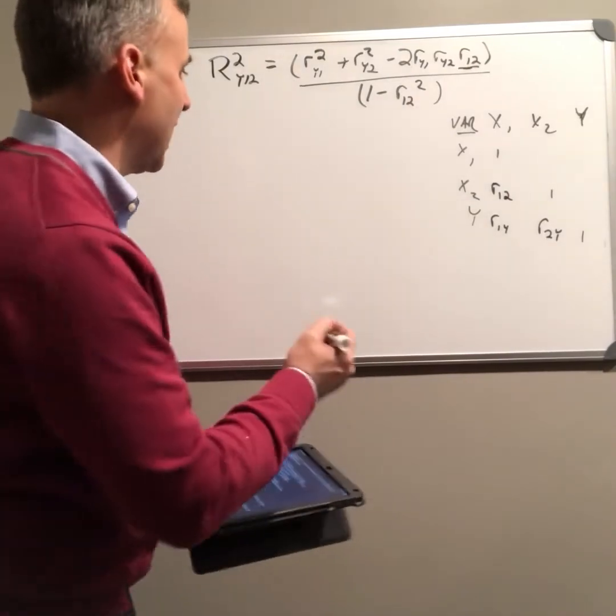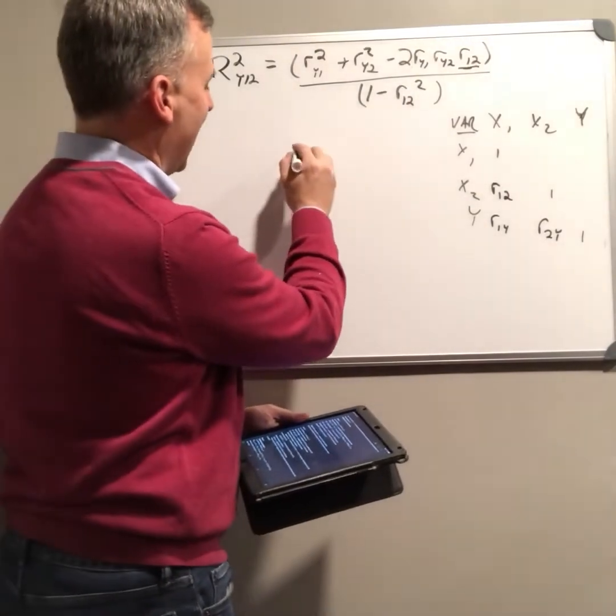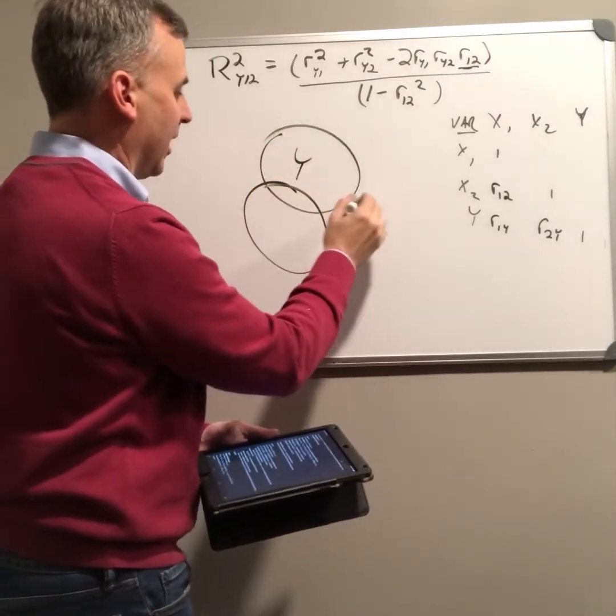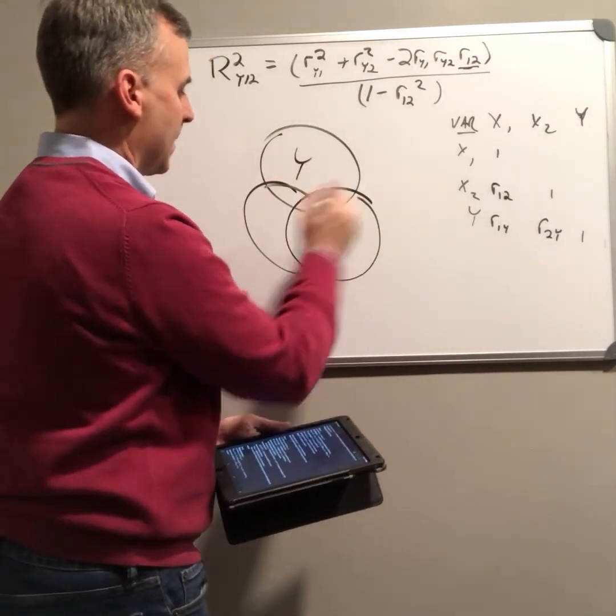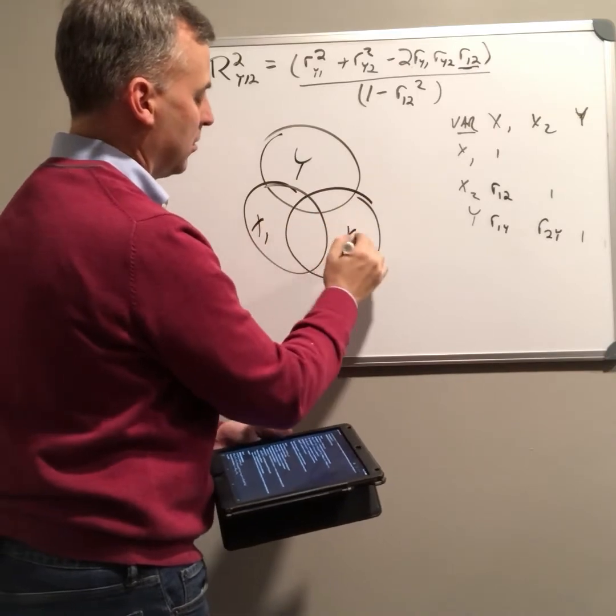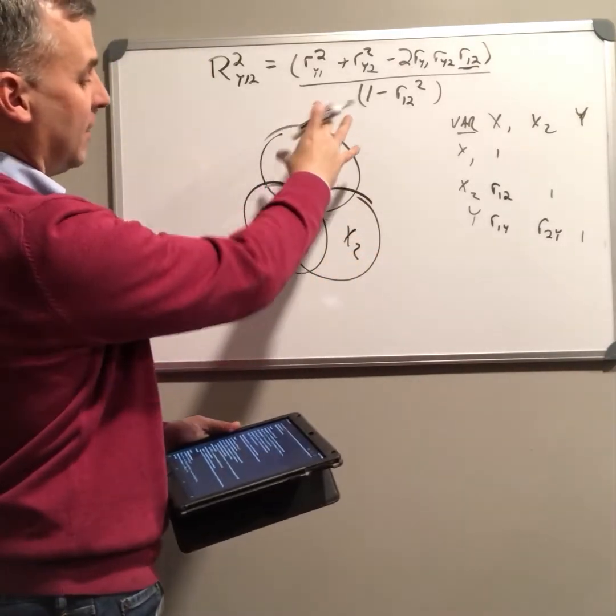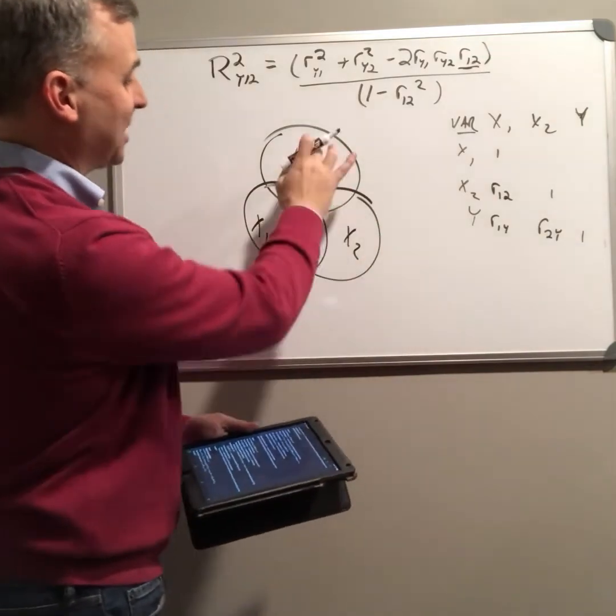So what's happening now? First of all, let's look at what this looks like on our Venn diagram. Now there's a relationship between x1 and y. There's a relationship between x2 and y.